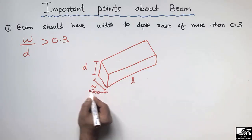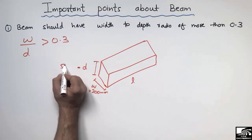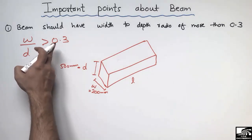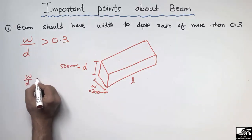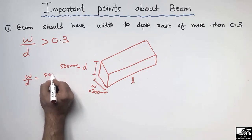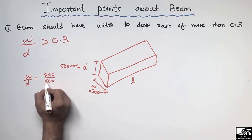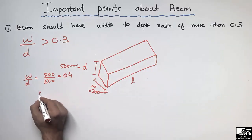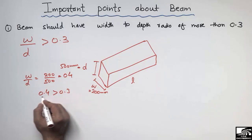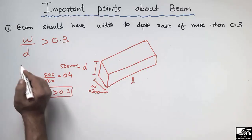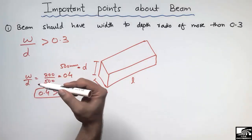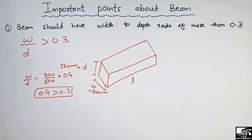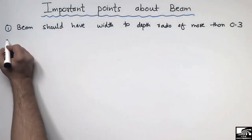Let's say after designing, the beam width comes out to be 200mm and the depth comes out to be 500mm. We check: width-to-depth ratio = 200/500 = 0.4, which is greater than 0.3. So we are satisfied with the first condition — it is good to have a beam width-to-depth ratio greater than 0.3.